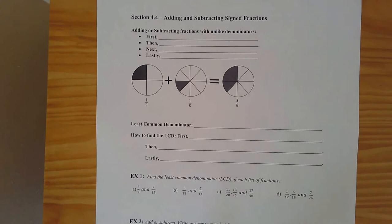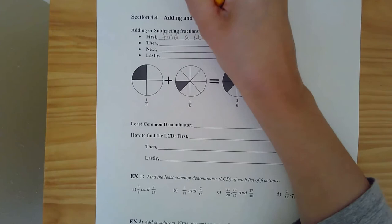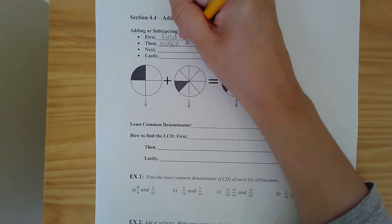So the steps to adding and subtracting fractions: first, you're going to have to find a least common denominator — I'm going to abbreviate that with an LCD, which stands for least common denominator. Then you're going to make some equivalent fractions that have that LCD as their denominator.